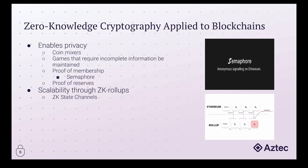Now we're going to look at a few ways that zero-knowledge can be applied to blockchains. There are two different areas where it can be very beneficial: number one is privacy, and number two is scalability through ZK Rollups. Looking at the privacy side, there are a number of applications where enabling privacy can achieve some interesting functionality. Number one is CoinMixers — for those familiar with TornadoCash, this is the same concept. What a CoinMixer allows is for you, along with a group of people, to deposit a fixed amount of tokens to a smart contract, and then from another address, withdraw those tokens, with the path from address one to address two being completely obscured.